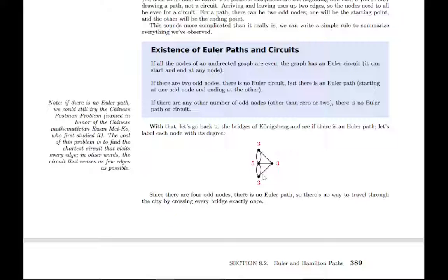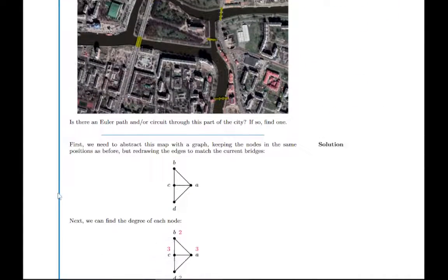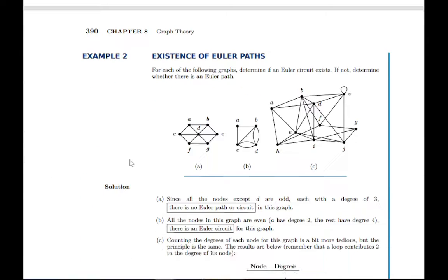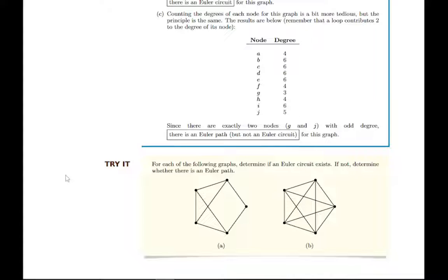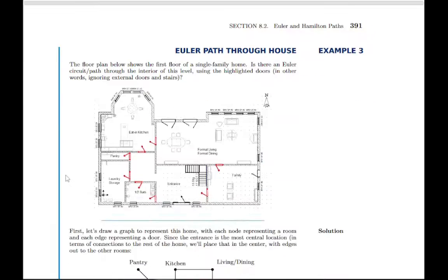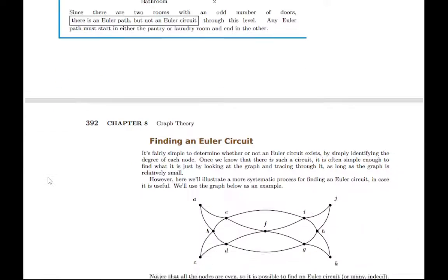So without even trying different possibilities, we can immediately tell there's no Euler circuit or path for this bridge problem. You can go through an example and practice with a couple of these, finding whether there's an Euler path or circuit. It just boils down to counting the degrees. And you can see in each example, it just follows that same pattern.